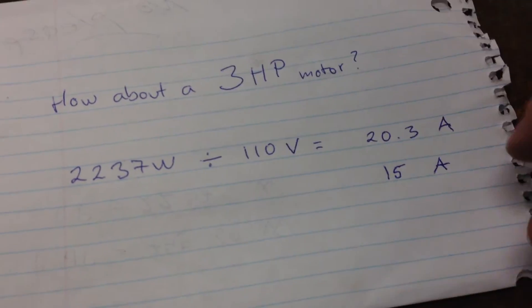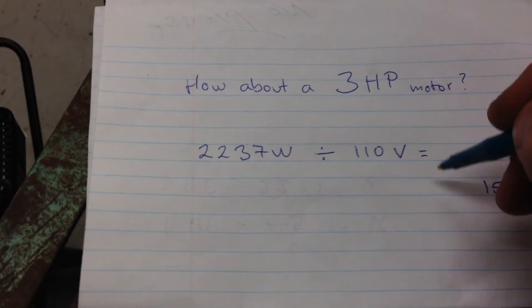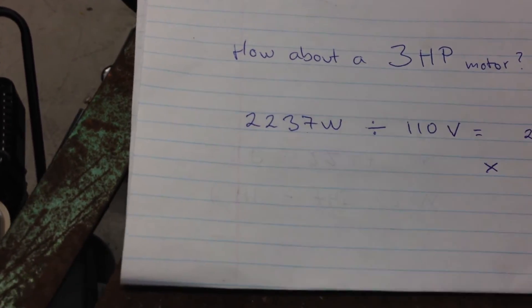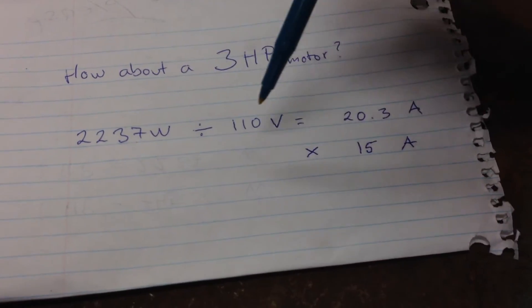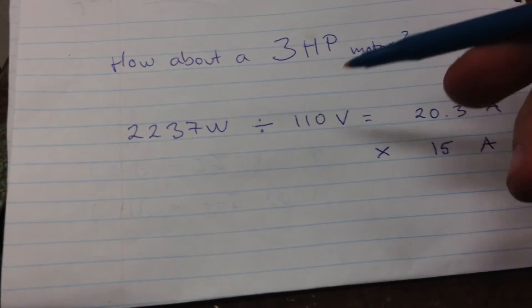15 amps, we're reading it this way, so 15 amps multiplied by 110 volts. 110 times 15, that's going to equal 1650 watts.